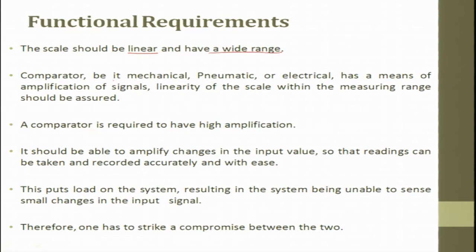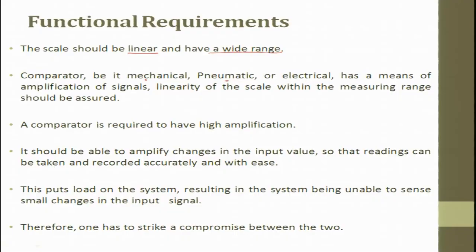The comparator, be it mechanical, pneumatic, or electrical — the source can work on mechanical means using springs and levers, so you can magnify 10 times; both magnification and demagnification are possible. Generally we magnify using a coiled spring or torsion spring or leaf spring. Difference in air pressure can also be used for measuring with a comparator. Electrical can also be used as a means of amplification of the signal. Linearity of the scale within the measurement range should be assured.